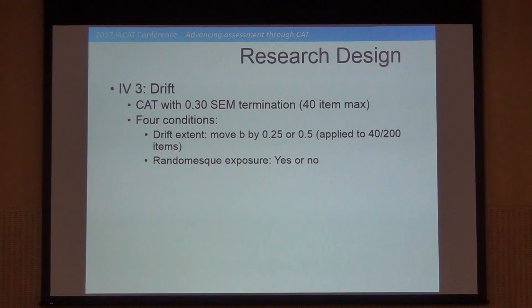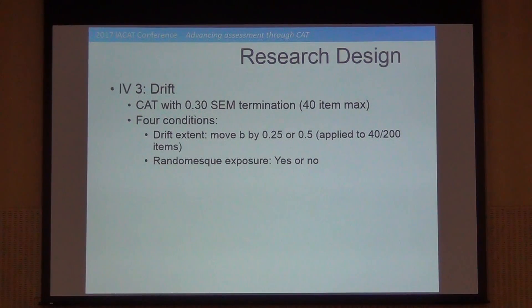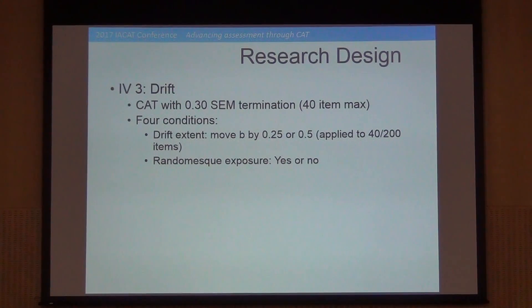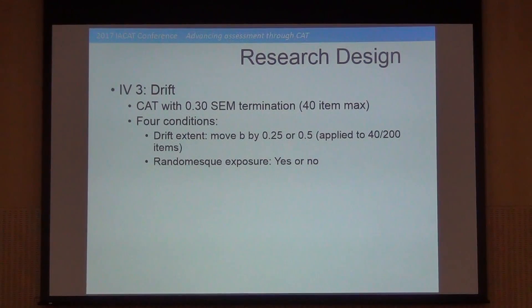For the drift simulation, the CAT algorithm would select items based on the item parameters as if the item were normal, but when generating responses for the simulation, it would use new item parameters — that is, what if the item was compromised, making it look a lot easier for the subgroup. So it uses the new parameters for generating responses but the old parameters for item selection during data collection.